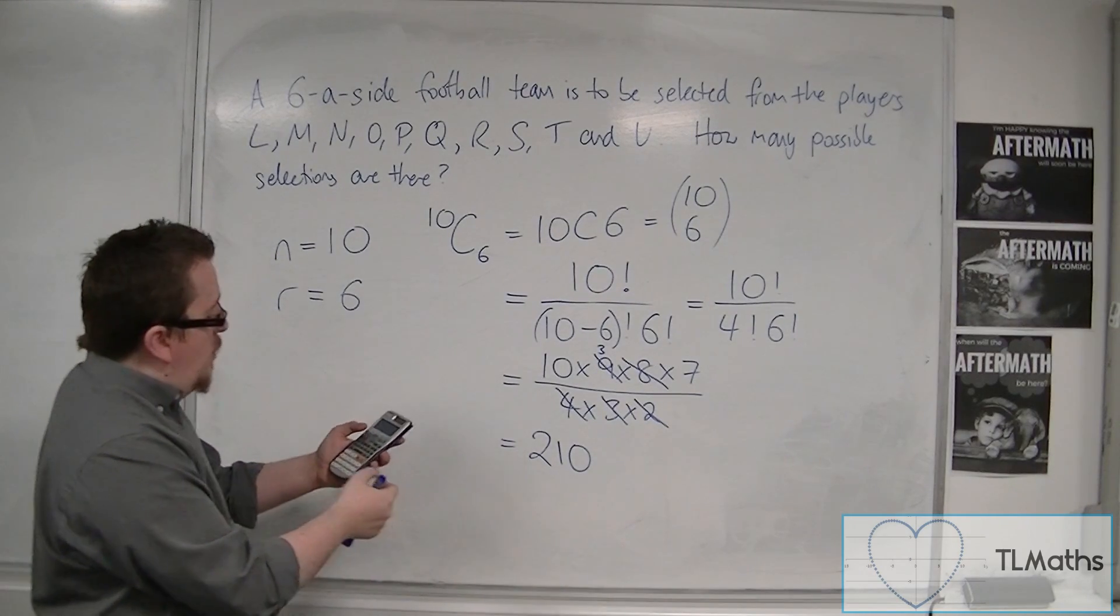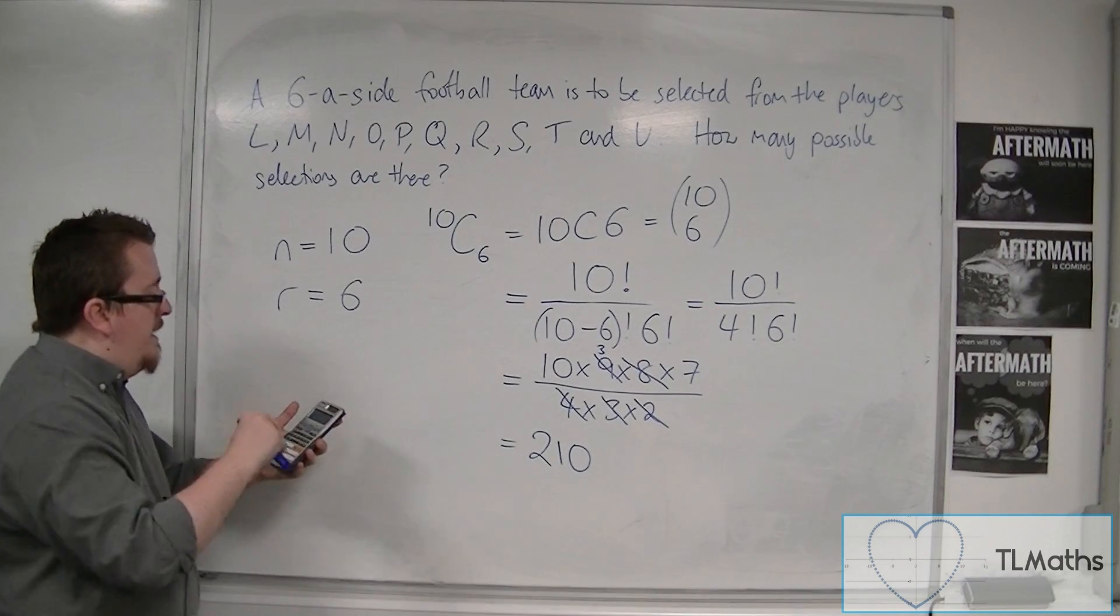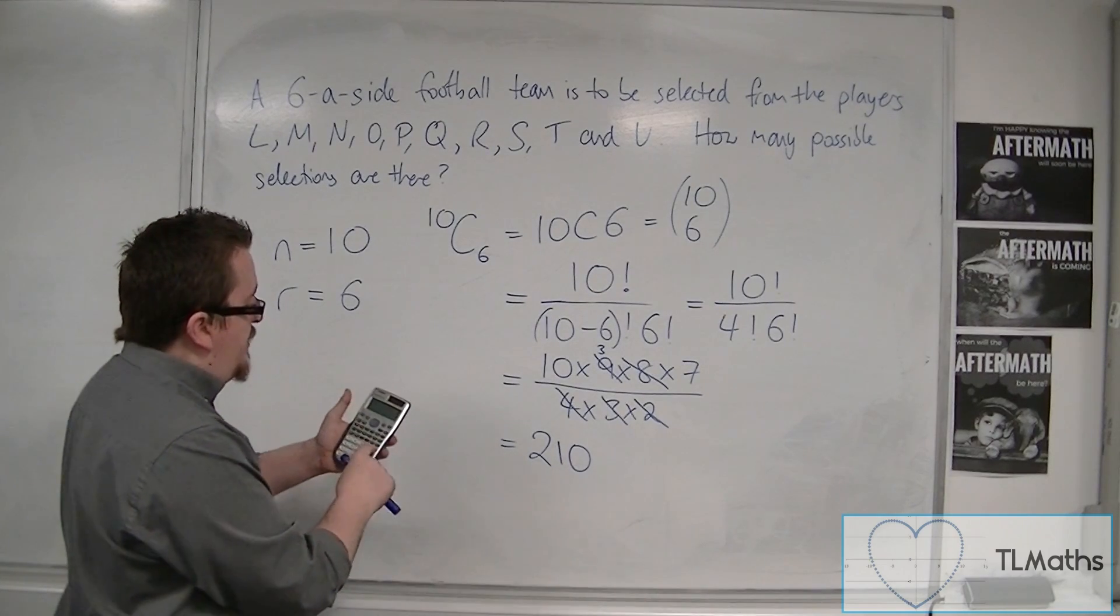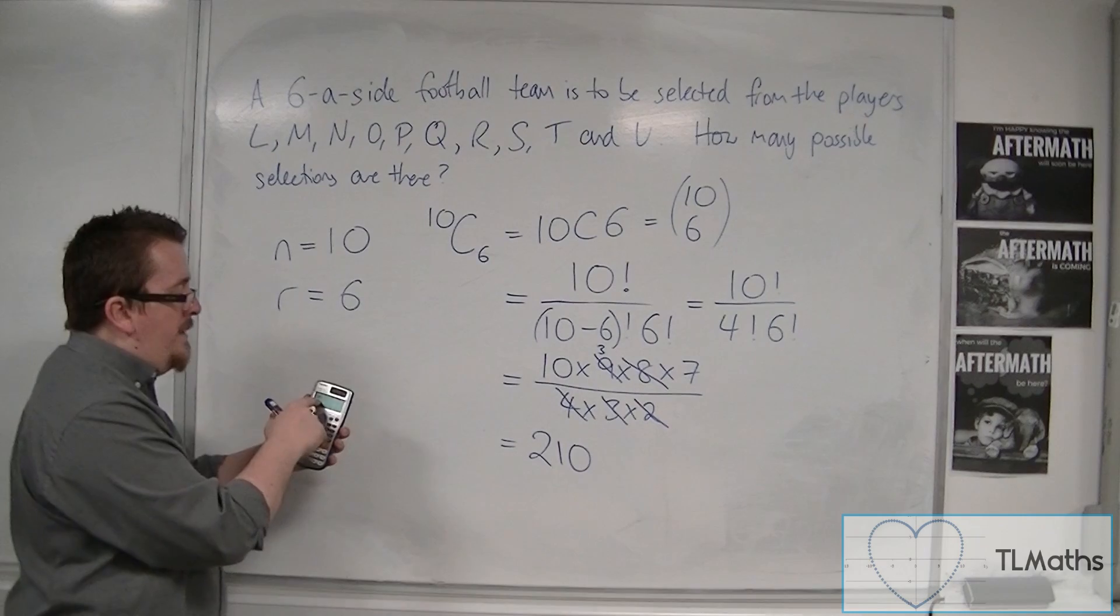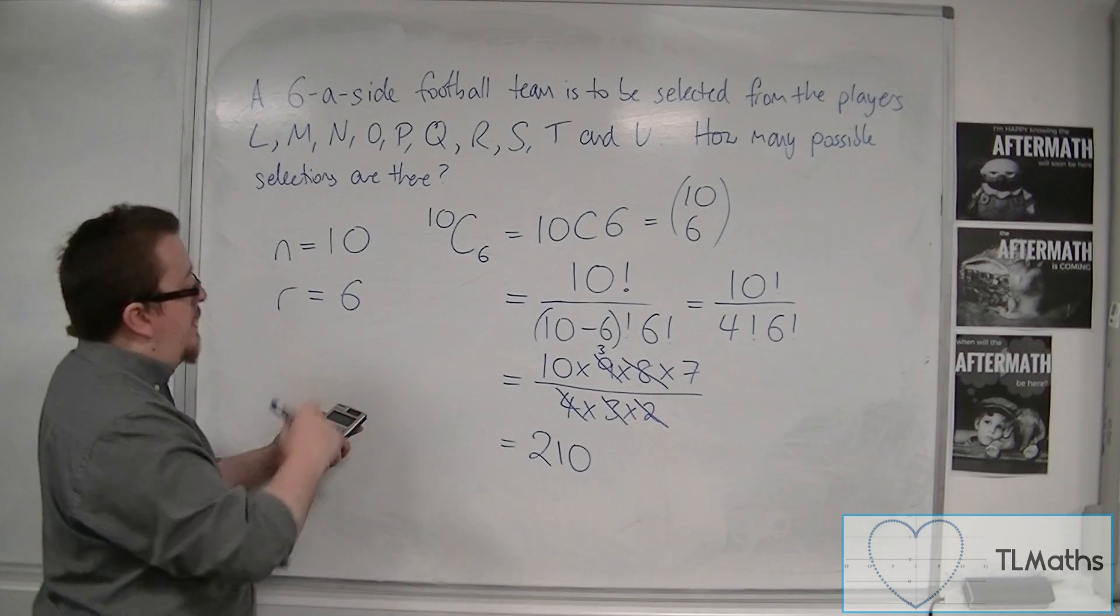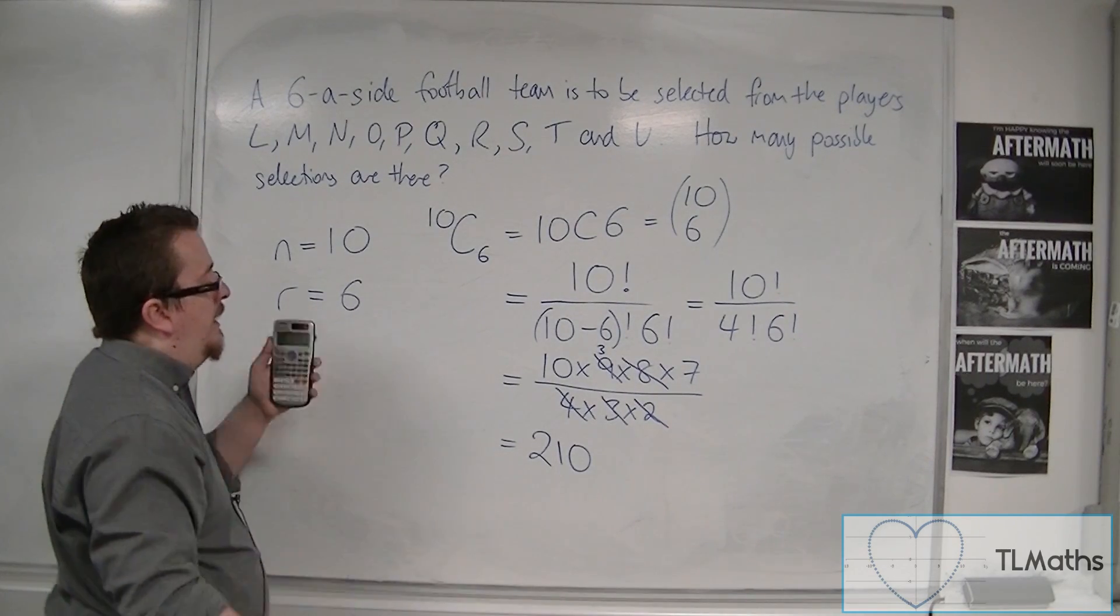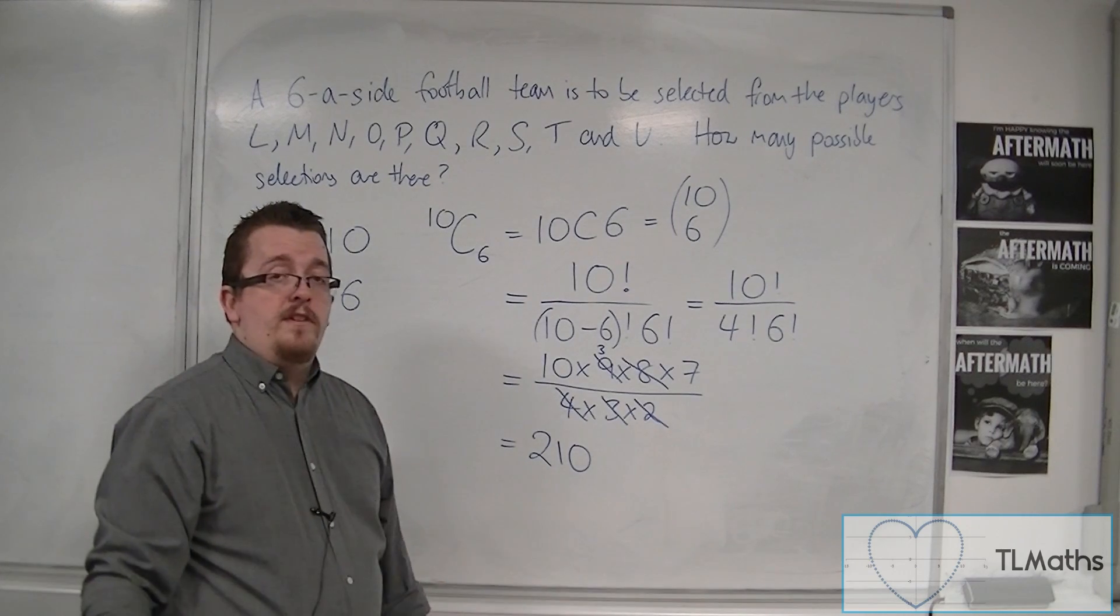So you want to type 10, then shift the division symbol, and you should find a C has come up on the screen. Then press 6, and then equals, and you should get 210.